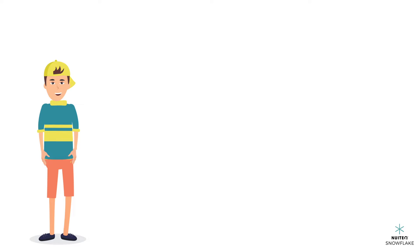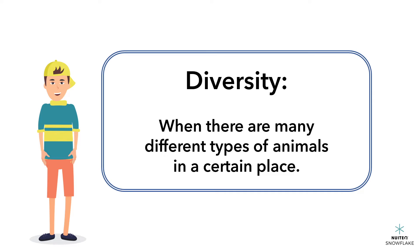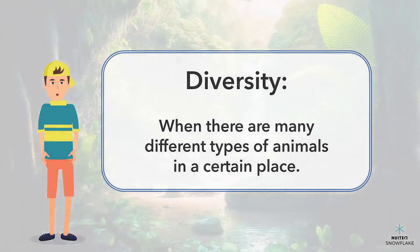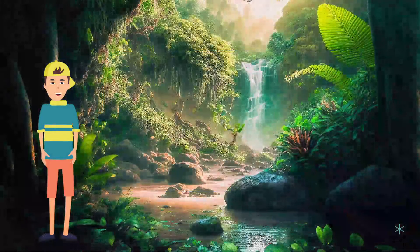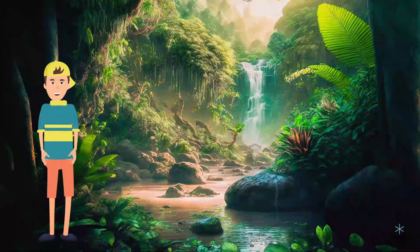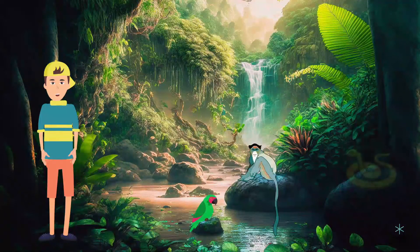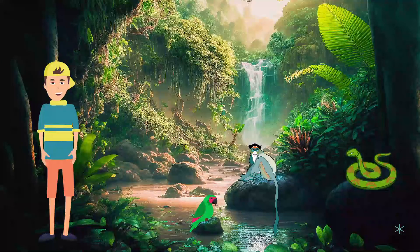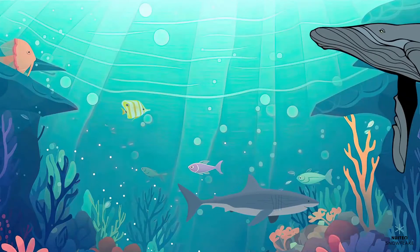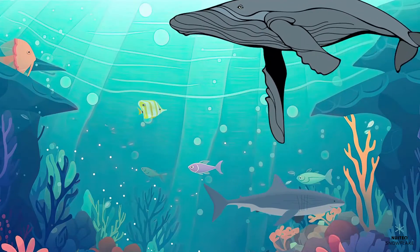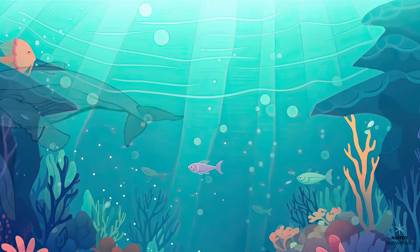Now, let's talk about diversity. Diversity means that there are many different types of animals in a certain place. For example, if you go to the jungle, you'll find monkeys, birds, and snakes, and they are all different from each other. The same thing goes for the ocean — you'll find different types of fish, sharks, and whales.